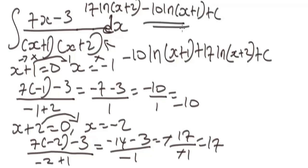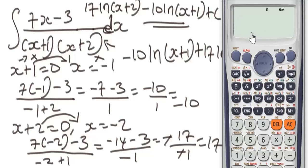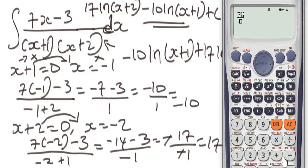Let's verify this answer using the calculator. First, clear it and press Shift to put it in default mode. Then put it in Radian mode — this is very important for integration. Press Shift, then Mode, and select Radian (option 4). Next, store the number 2 as x — press 2, Shift, then the x button — so 2 is stored as x. Now evaluate the original expression: 7x minus 3 over bracket (x + 1)(x + 2), closing the brackets.